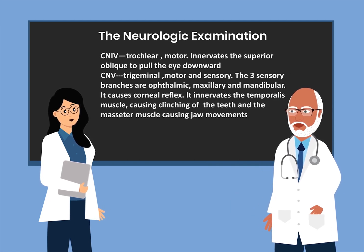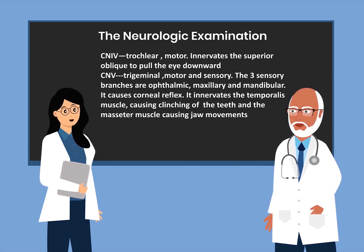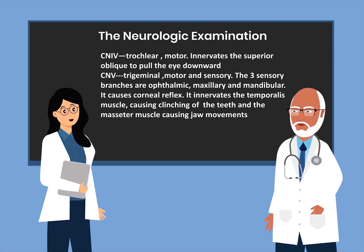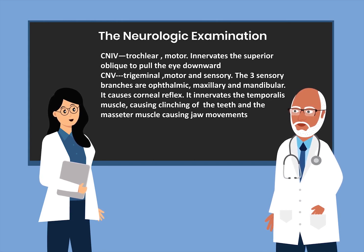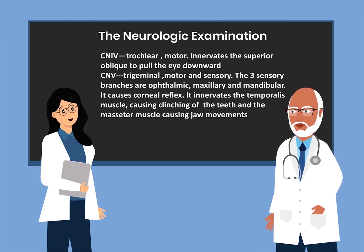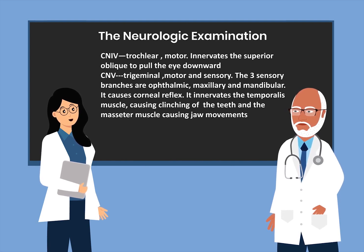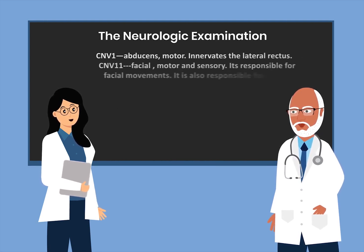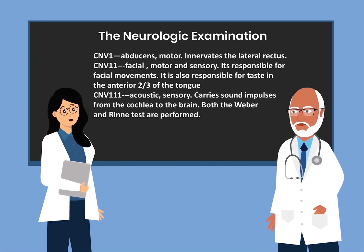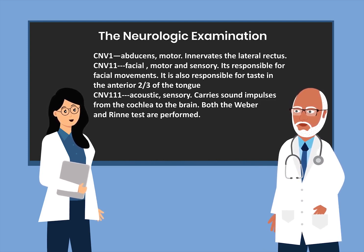Cranial nerve four is the trochlear. It's motor and innervates the superior oblique, pulling the eye downward. Cranial nerve five is the trigeminal. It's motor and sensory. The three sensory branches are the ophthalmic, the maxillary, and the mandibular. It causes the corneal reflex and innervates the temporalis muscle causing clenching of the teeth and the masseter muscle causing jaw movements. Cranial nerve six is the abducens — it's motor and innervates the lateral rectus.